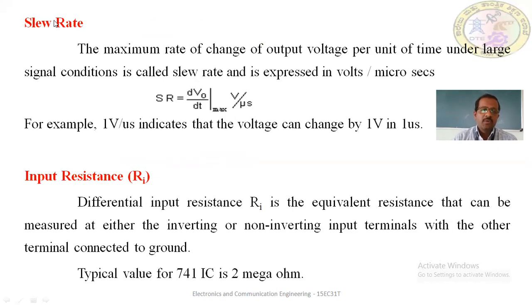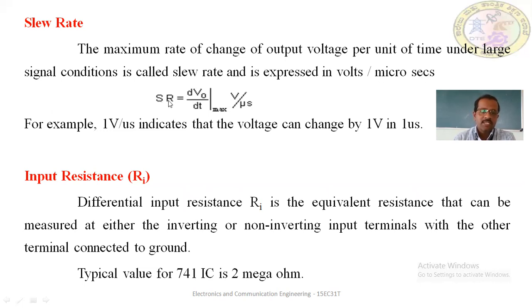The slew rate is the maximum rate of change of output voltage per unit time under large signal conditions, expressed in volts per microsecond. The formula is SR = dV0 / dT. For example, 1 volt per microsecond means the voltage can change by 1 volt in 1 microsecond.